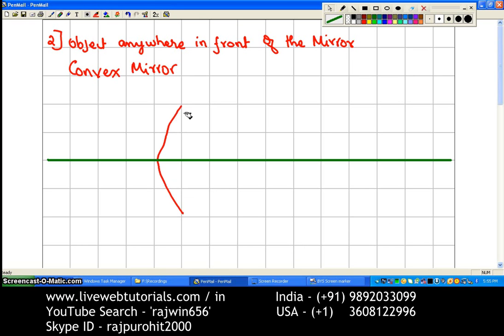which is drawn by keeping the protractor with 90 degrees line on the principal axis, so that it is equal on both the sides above and below the principal axis. Okay, now this is our pole of the mirror.